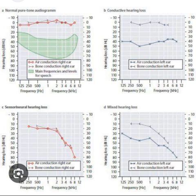Beyond SAT and SRT, additional word recognition or speech discrimination testing may be performed, in which monosyllabic words are presented at 25 to 40 decibels above the SRT and the patient is asked to repeat them. A normal score is 80 percent or greater. If the score decreases as the loudness increases, the phenomenon is known as rollover, which is indicative of retrocochlear pathology such as a vestibular schwannoma.